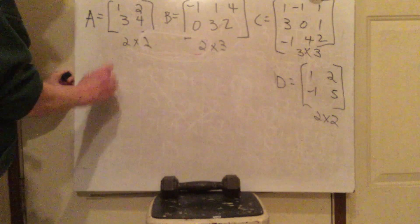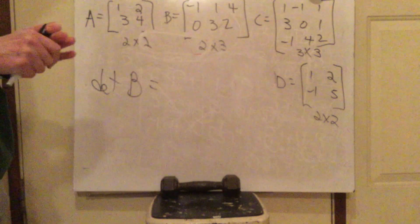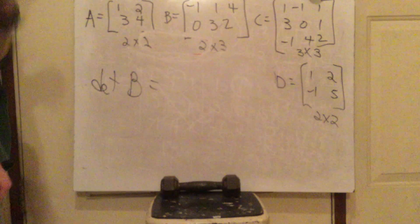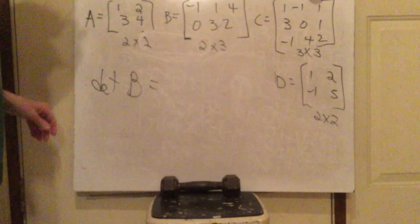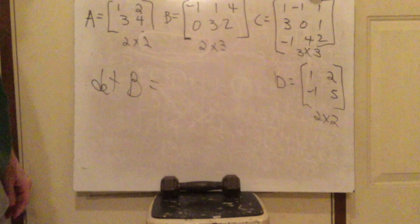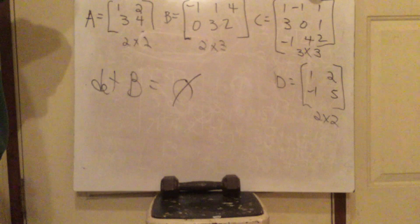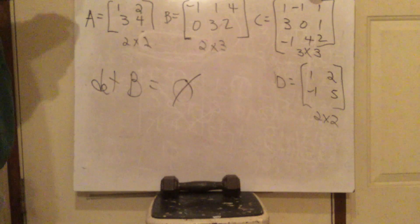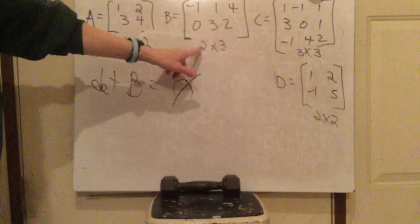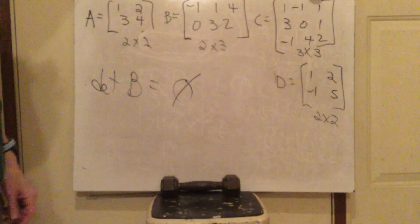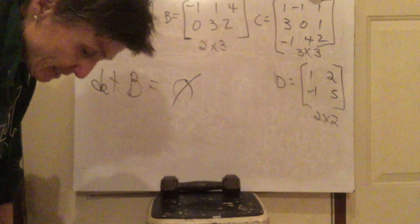Now find the determinant of B. If you're paying attention, you know you can't do that. Why? Because B is not square. If it's not square, you cannot find its determinant.